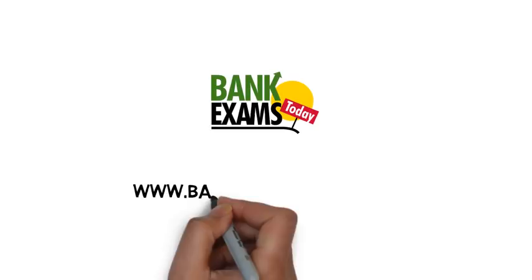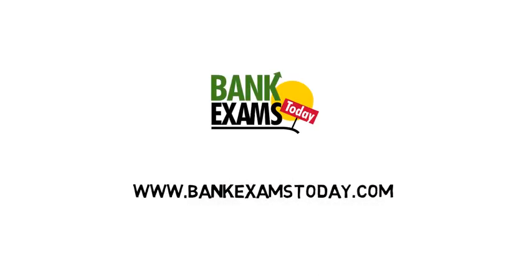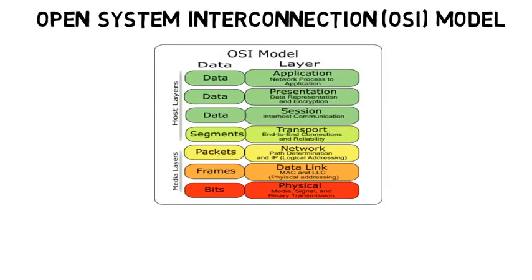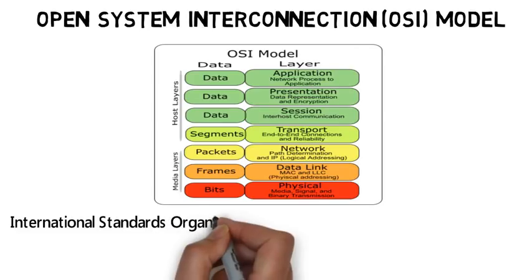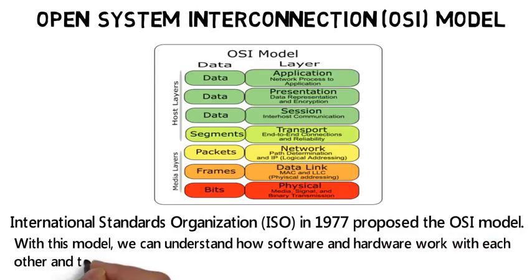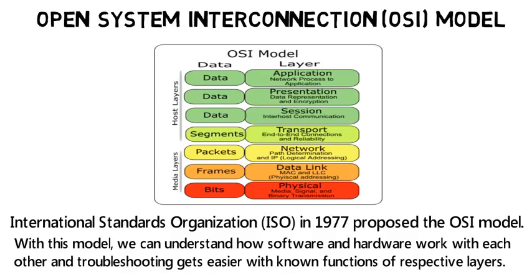Hi students, welcome back to bank exam study.com. In this video lecture we will learn the OSI model and functions of its layers, as it forms an important topic from which basic networking questions are usually asked. The Open System Interconnection model was proposed by the International Standards Organization, ISO, in 1997, so that national and worldwide communication systems can be designed which are compatible to each other. The devices across various nations are made by different companies, so there are compatibility issues — that's why this OSI model came into picture.